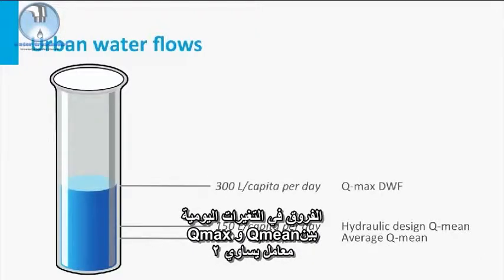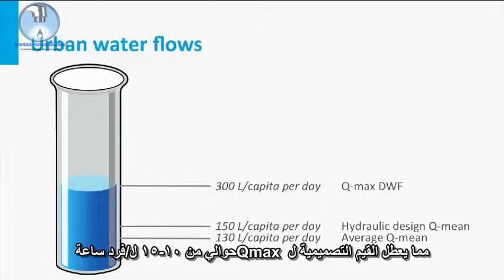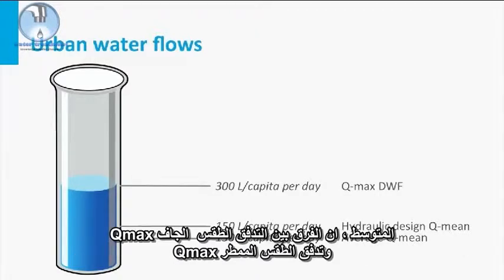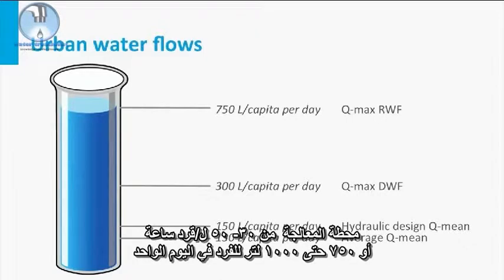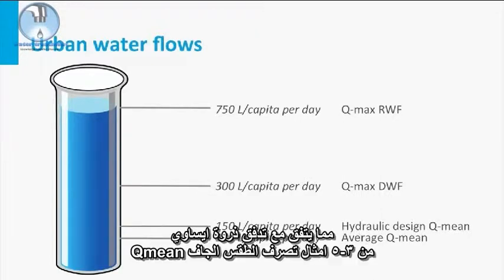The difference between the diurnal fluctuations between Q-mean and Q-max gives design Q-max values between 10 to 15 liter per capita per hour. On average, the difference between the dry weather flow Q-max and the rain weather flow Q-max, or peak flow, is again a factor of 2.5, indicating a maximum hydraulic capacity of the STP of 30 to 50 liter per capita per hour, or 750 up to 1000 liter per capita per day. This agrees with the peak flow being 3 to 5 times the dry weather flow Q-mean.